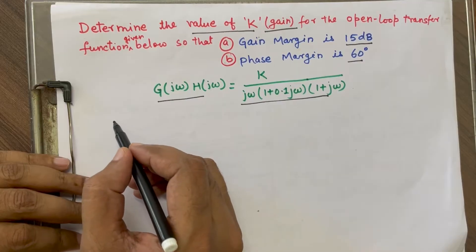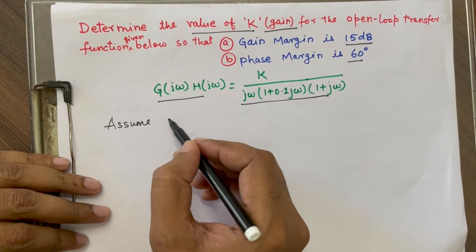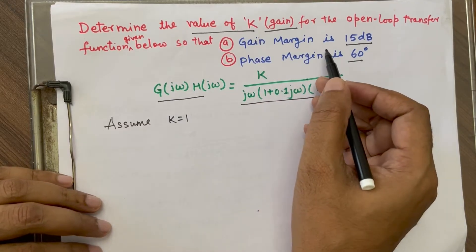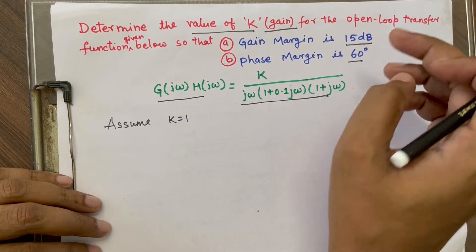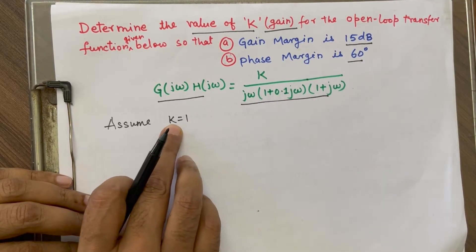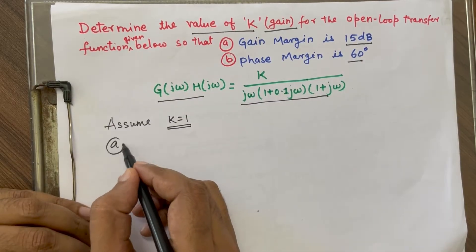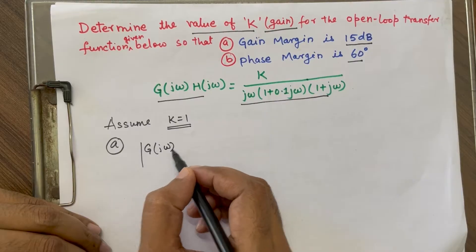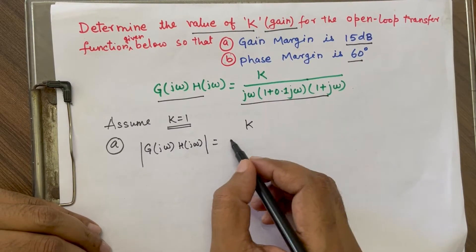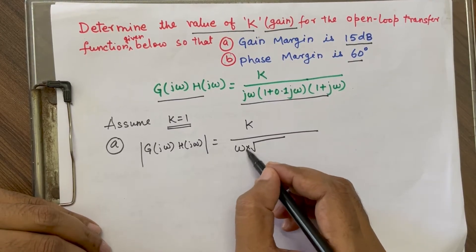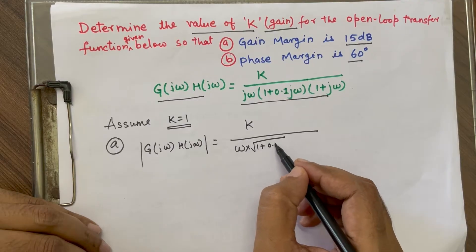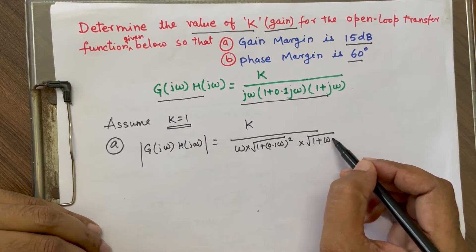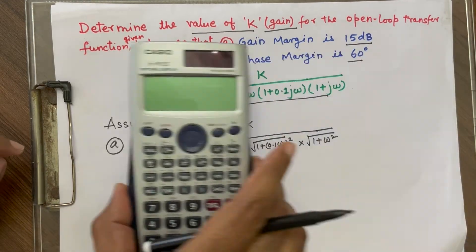First, we are going to assume K equal to 1. If I take K equal to 1 and find out the gain margin, and if the gain margin is more than 15 dB, that means the K value will be more than 1. For the first case, the magnitude can be written as: numerator is K, magnitude of jω is ω, multiplied by magnitude of (1 + 0.1jω), which is √(1 + 0.1ω²), then multiplied by another complex number magnitude √(1 + ω²).